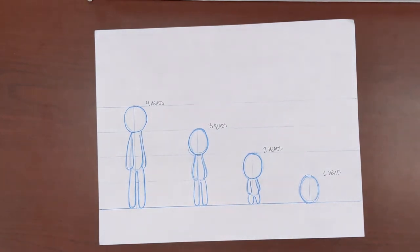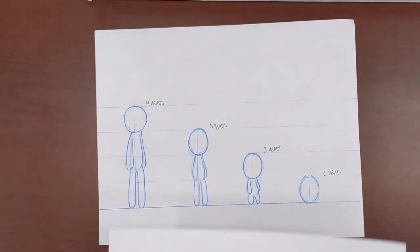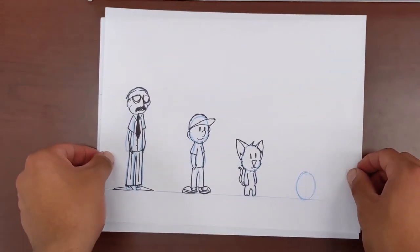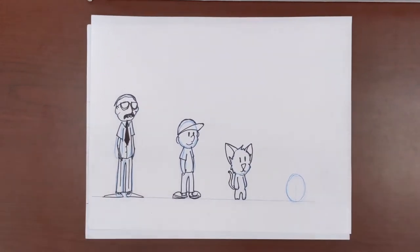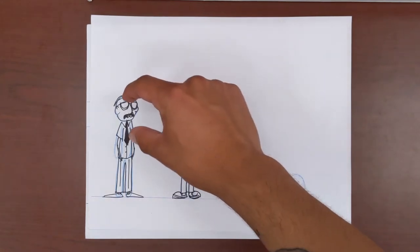This rule of thumb can also help us when we are deciding what kind of character we are drawing. The taller the character and the smaller their head in relation to their body, the more grown up our characters look. The smaller their body and the bigger their head, the younger and cuter our characters will start to look.